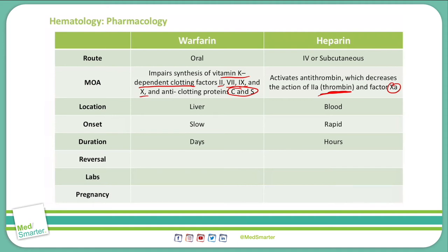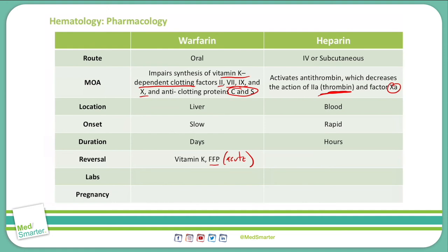To reverse warfarin, all we have to do is give vitamin K. Because warfarin affects the vitamin K-dependent clotting factors, giving vitamin K reverses that effect. In an acute situation where we need immediate reversal of warfarin, we can give fresh frozen plasma. To reverse heparin, we can simply stop giving it and see that effect very quickly. But if we need to reverse it in an emergency situation, we can use protamine sulfate.